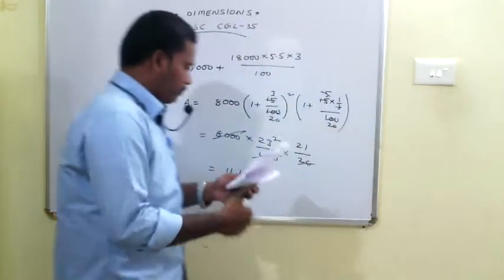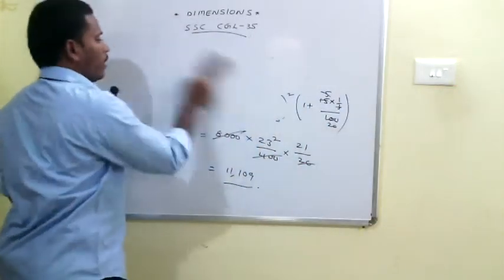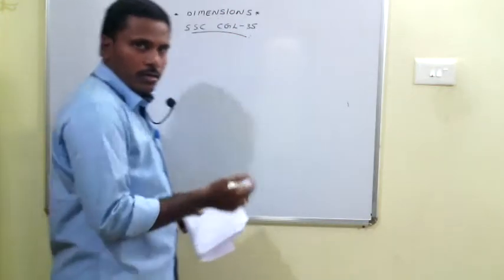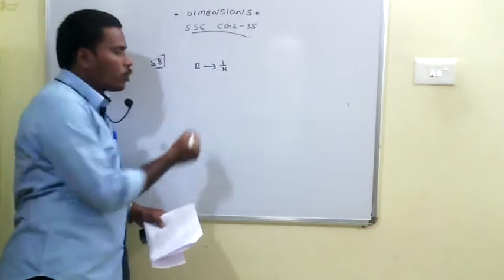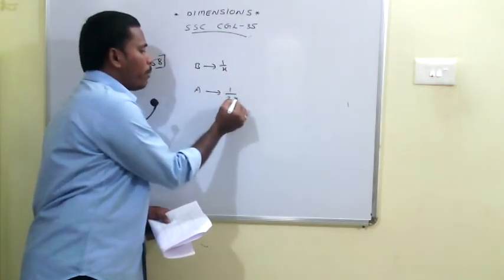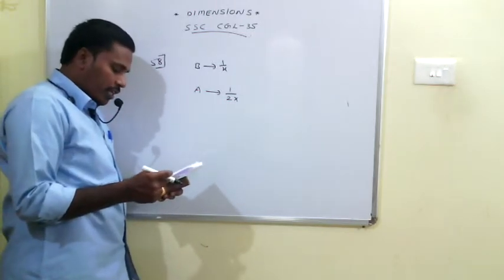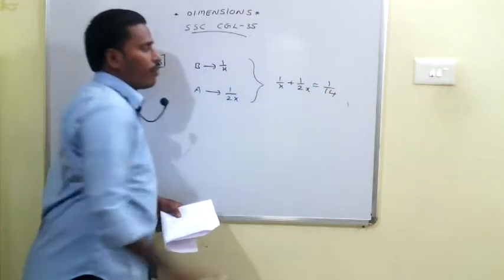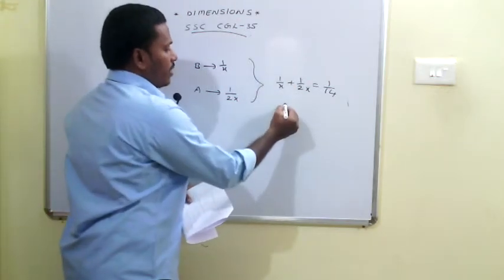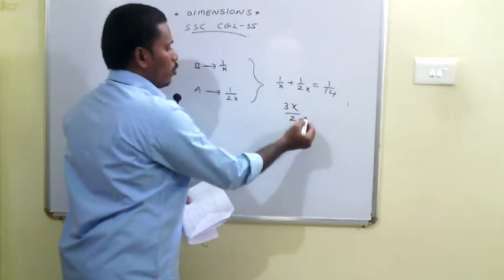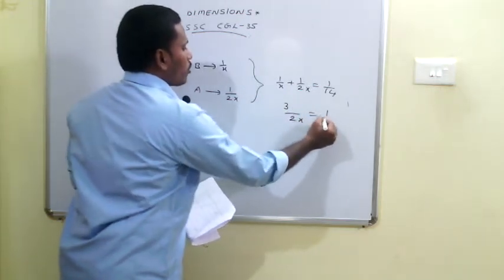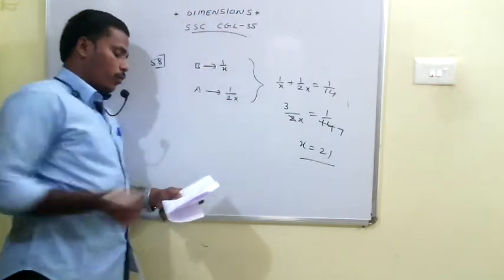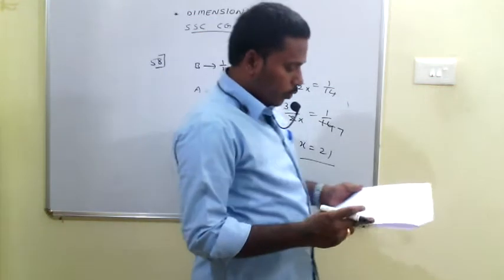The 58th problem: A is half as good a workman as B. Let one day's work of B be 1/x, so one day's work of A is 1/(2x). Together they finish a job in 14 days, so 1/x + 1/(2x) = 1/14. Simplifying: 3/(2x) = 1/14, giving x = 21. Since x = 21, B can finish the job alone in 21 days.